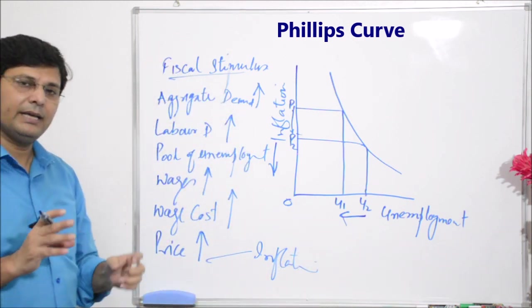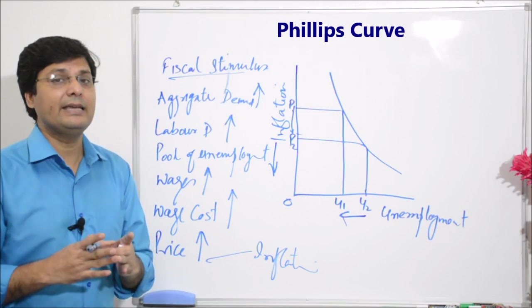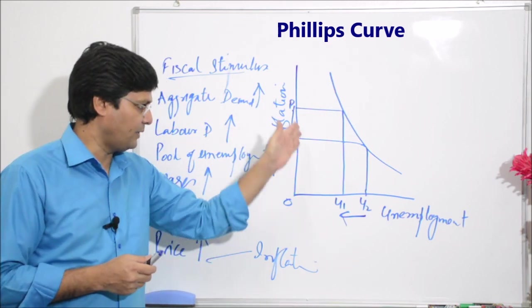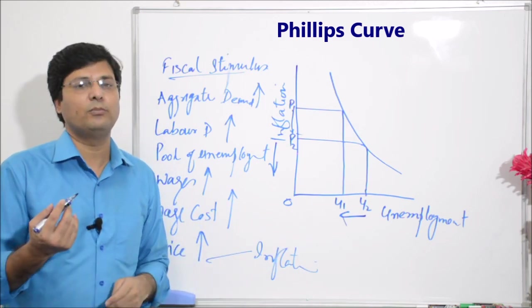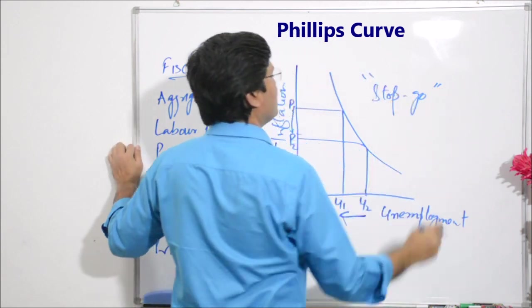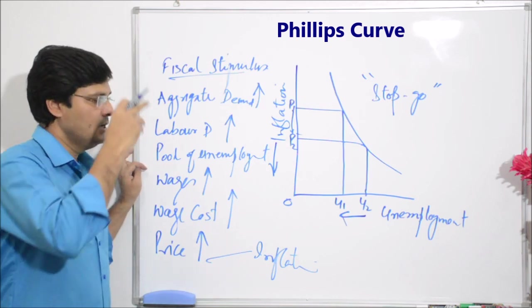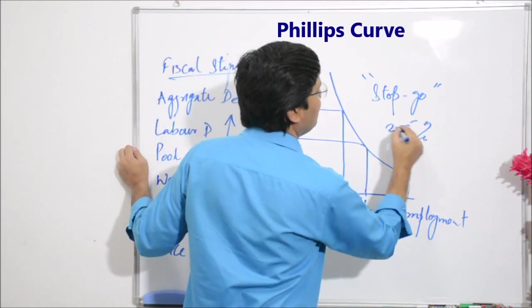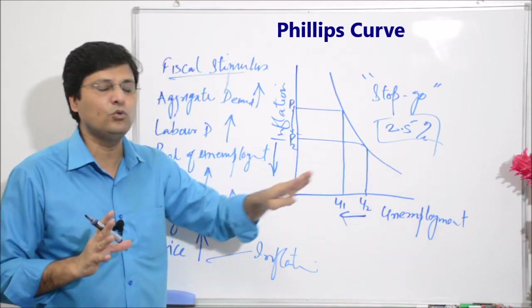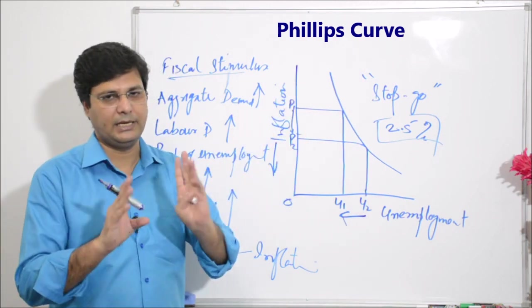To poora sequence yeh bata raha hai ki jaise hi fiscal stimulus hota hai, unemployment decrease hota hai — logon ko zyada jobs milte hain, aggregate demand badhti hai, lekin prices bhi badh jaate hain. Isi wajah se governments ko ideas milte hain aur wo ek policy leke chalti hain jise hum 'stop-go strategy' kehte hain. Isme ek inflation rate target kar li jaati hai — jaise 2.5% inflation achieve karna — aur saari monetary aur fiscal policy us goal par lagti hai.